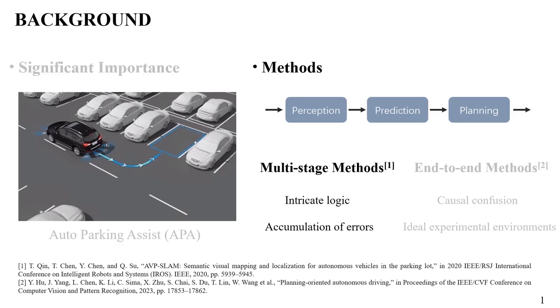Traditional multi-stage methods use a modular design, which leads to intricate logic and the accumulation of errors. End-to-end methods can address error accumulation, but these methods are primarily validated on datasets or simulators, leading to the problem of causal confusion and ideal experimental environments.